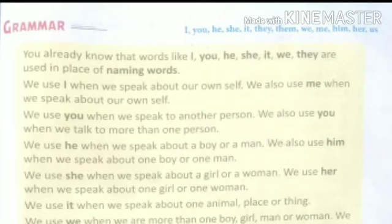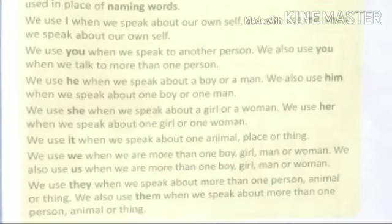Now, children, use of 'it'. We use 'it' when we speak about one animal, place, or thing. For example: The cat is small. We replace 'the cat' with 'it'. It is very cute.